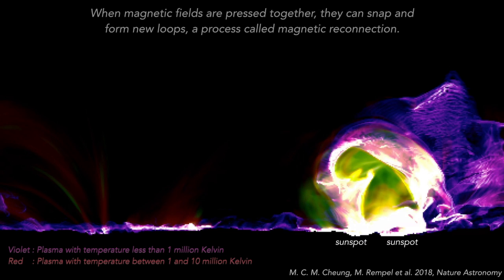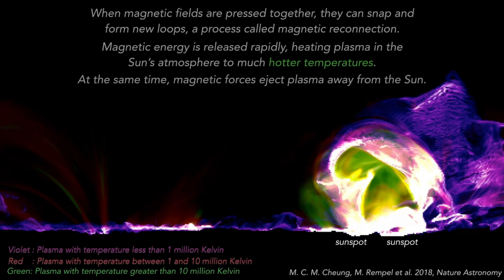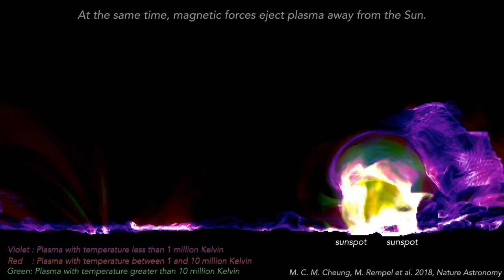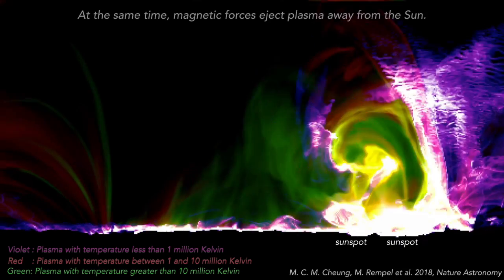When magnetic fields are pressed together they can snap and form new loops, a process called magnetic reconnection. Magnetic energy is released rapidly, heating plasma in the sun's atmosphere to much hotter temperatures. At the same time, magnetic forces eject plasma away from the sun.